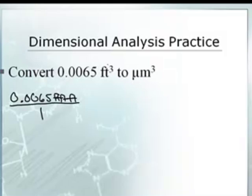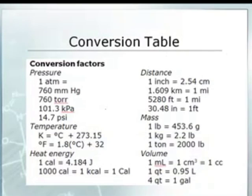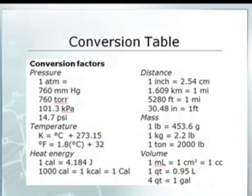I need to convert feet to centimeters, and then centimeters to probably meters, and then meters to micrometers. You could probably go centimeters to micrometers, but I don't know that conversion. So foot, foot, foot — I want to go from foot to centimeter. We have that conversion of 30.48. Wait — 30.48 inches? That's not right. 30.48 centimeters in one foot. That's correct. We've got to fix our table — that's centimeters. All right, that's good.